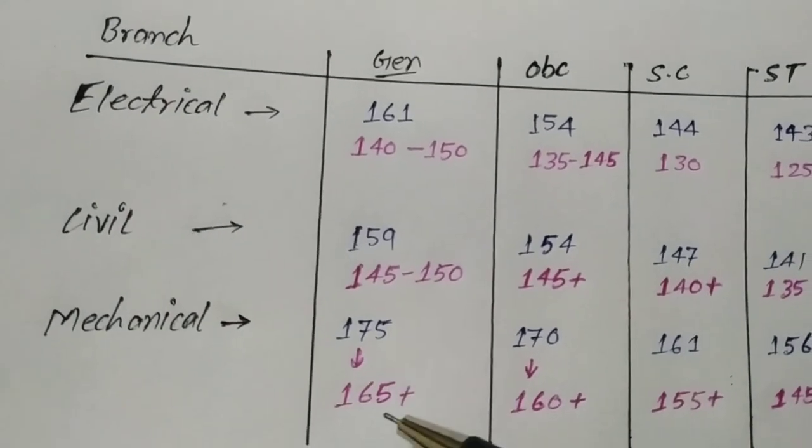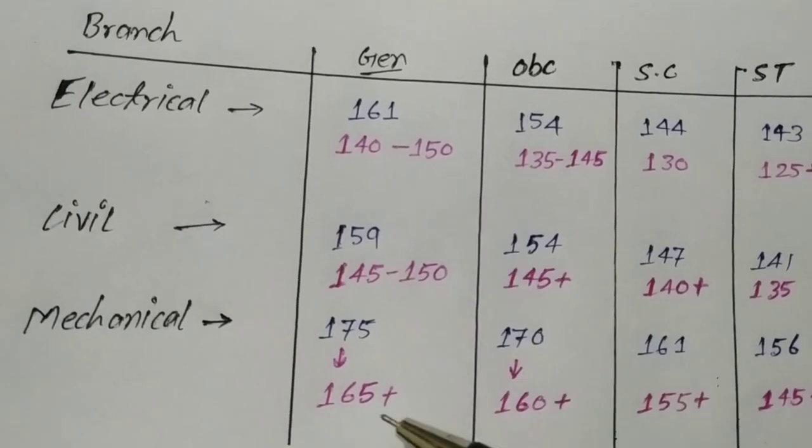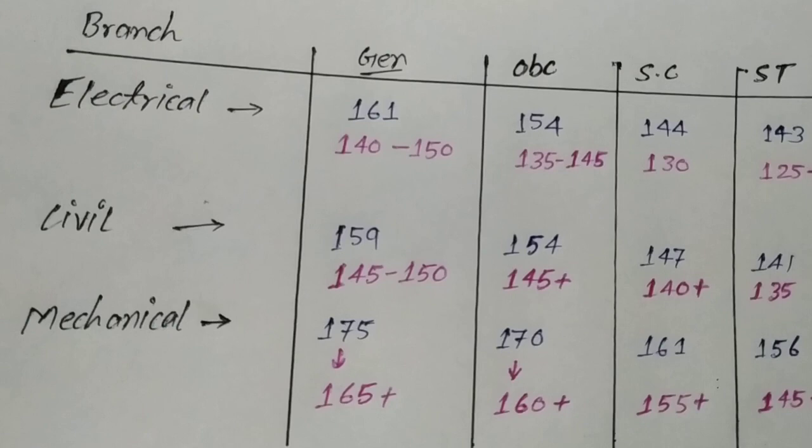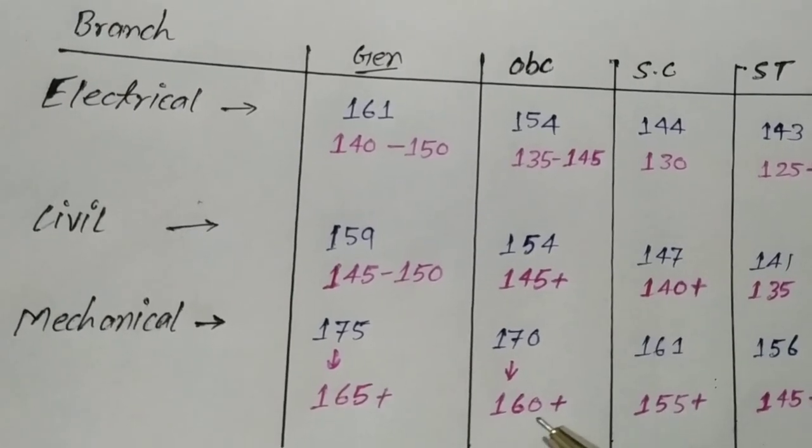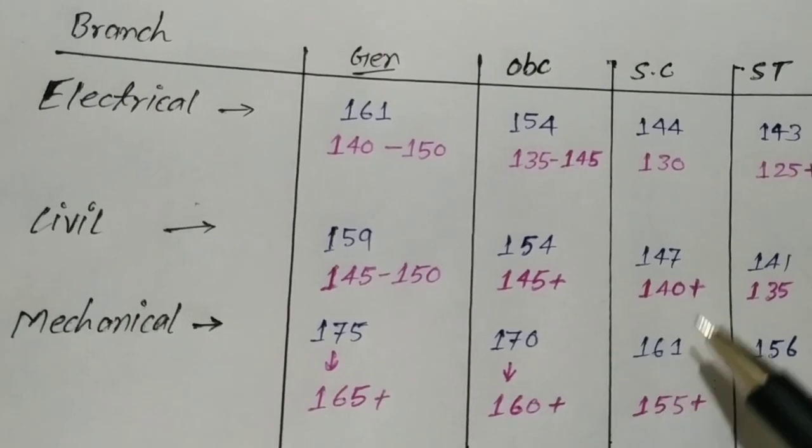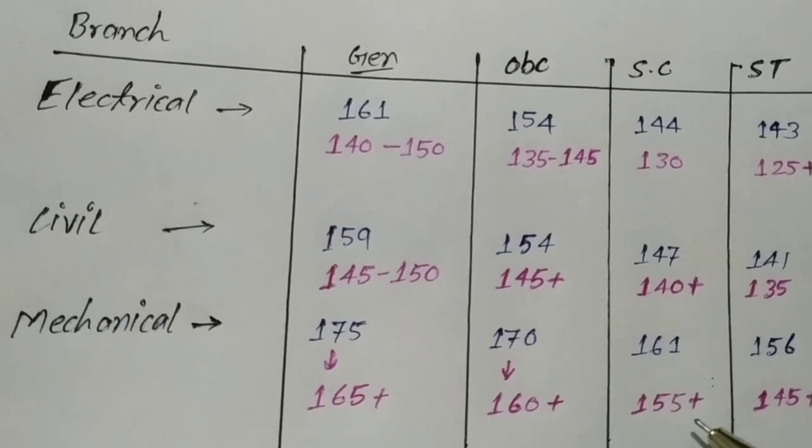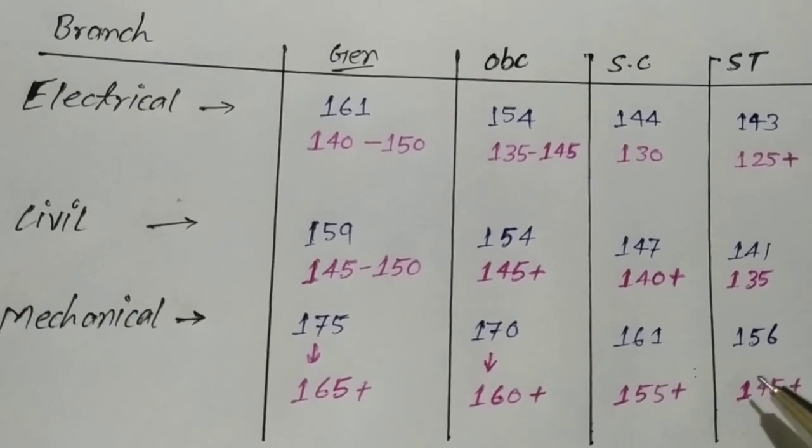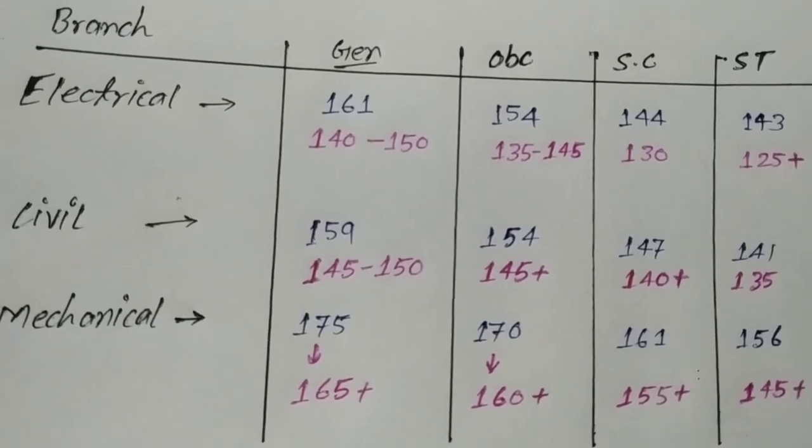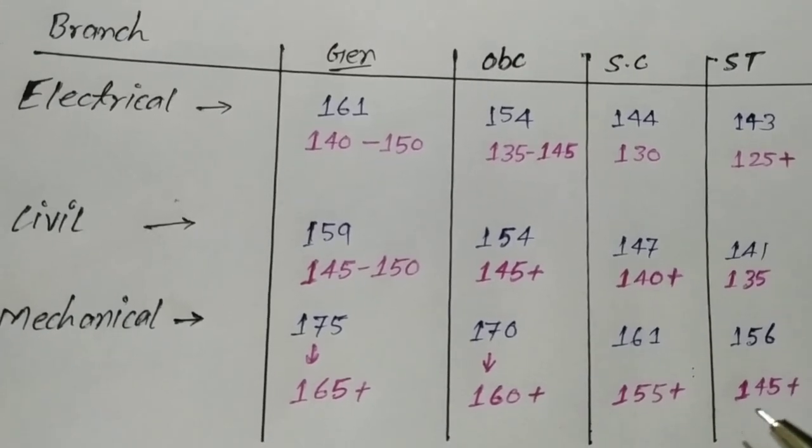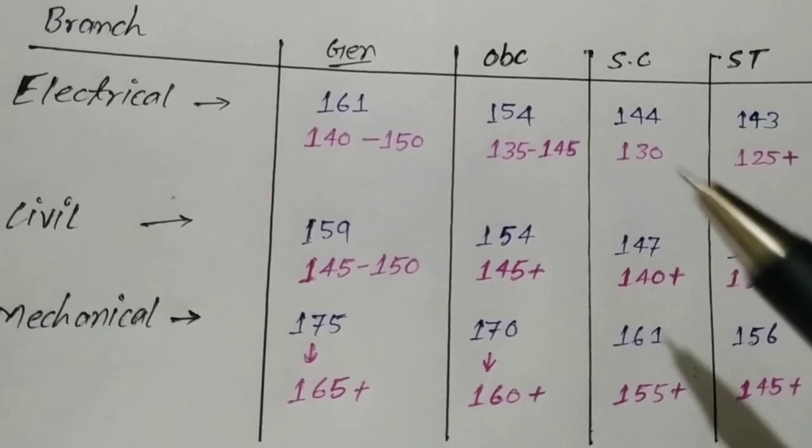For mechanical, the cut-off in 2017 for general was 175, expected 165 plus; OBC was 170, expected 160 plus; SC was 161, expected 155 plus; ST was 156, expected 145. Overall, the cut-off has around 5 to 10 marks decreased.